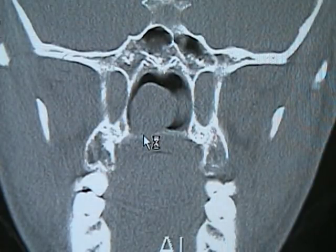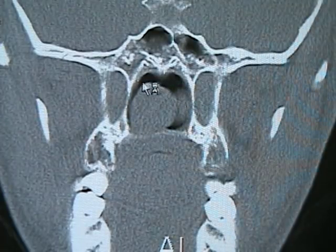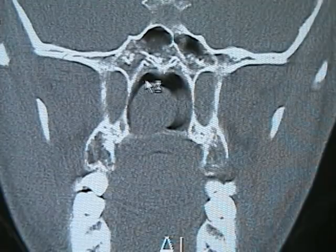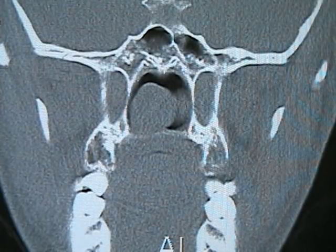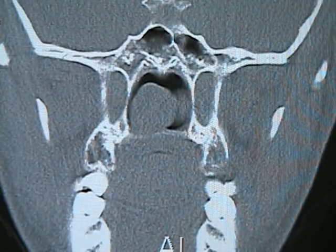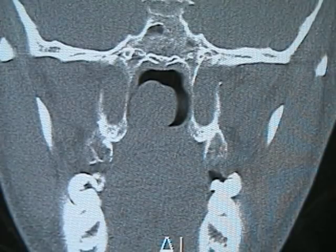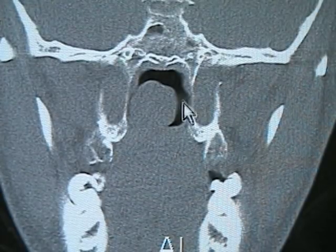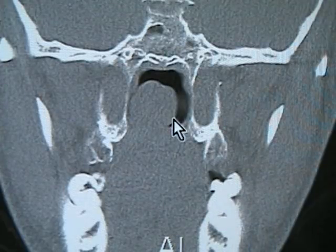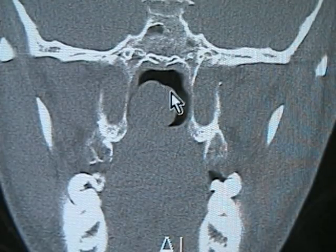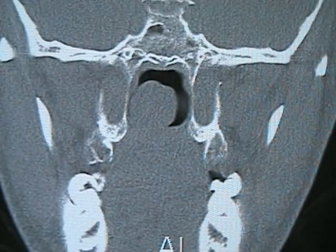The best clue to the fact that this really is a choanal polyp is this round extension which extends beyond the choana into the nasopharynx on the right side — this is the choanal portion of this nasal polyp. Even more posteriorly you can see the size of the choanal polyp and how it is causing significant nasal obstruction in the choana.